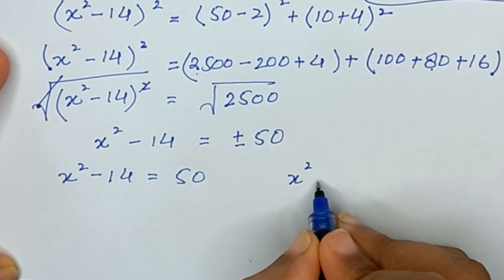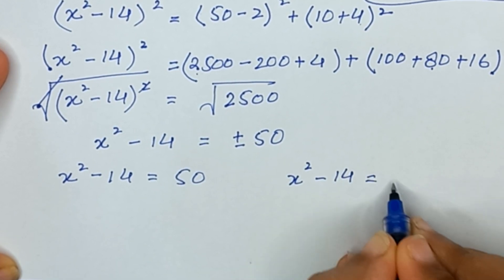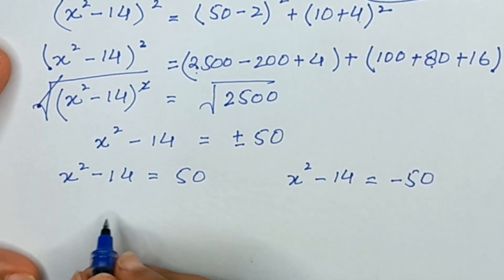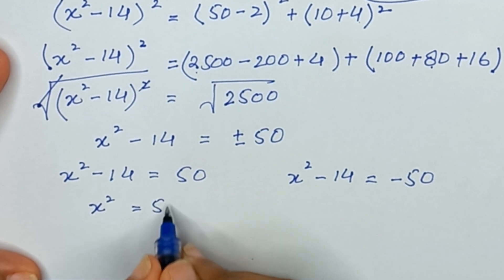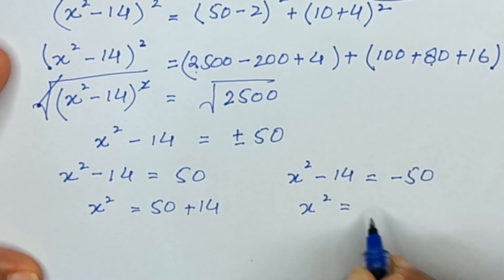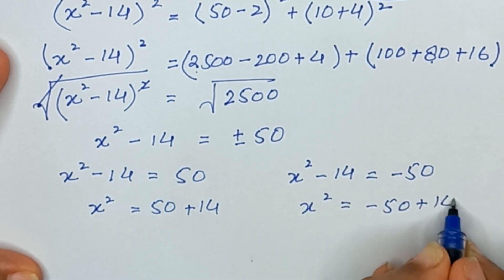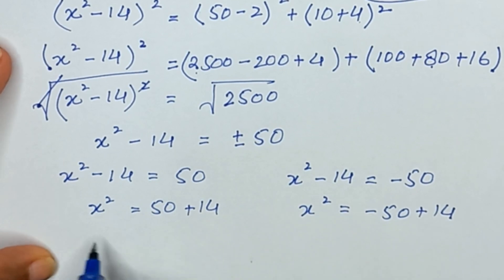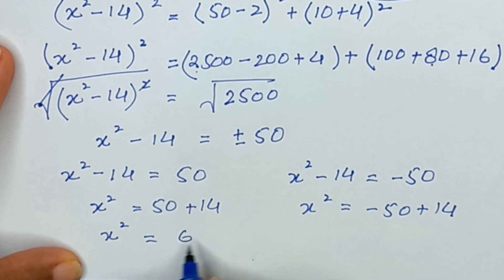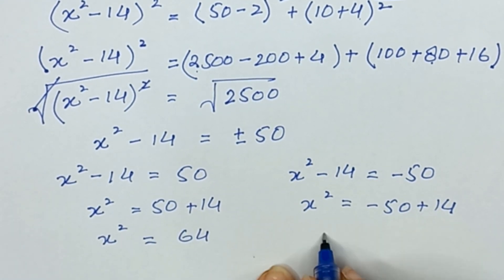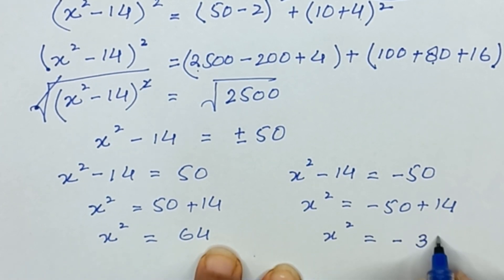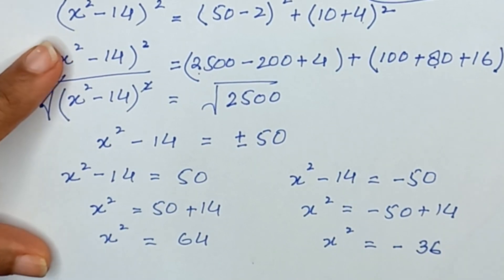Taking 14 to the right-hand side in each case: from the first, x squared equals 50 plus 14 equals 64; from the second, x squared equals minus 50 plus 14 equals minus 36.